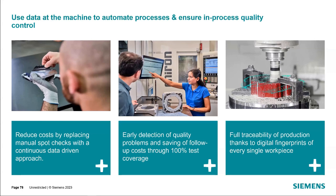With this process quality monitoring software, the benefits you're going to see: we're running these monitoring processes on every single part running through the machine, not just intermittent checks like running CMM on one out of every 50 parts. If a quality anomaly is detected, we detect it quickly so you don't produce a whole bad batch of parts. And the application includes report generation and storage, so you'll have full traceability for your machine processes and can interrogate the data at a future time if needed.